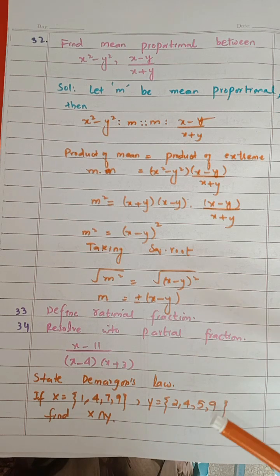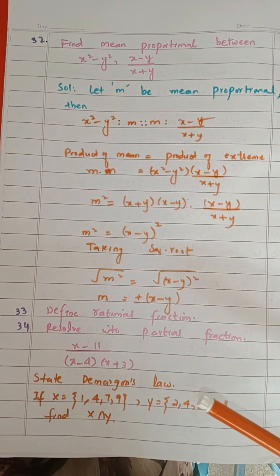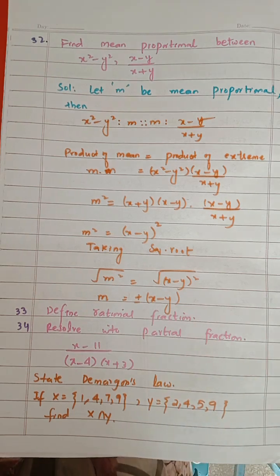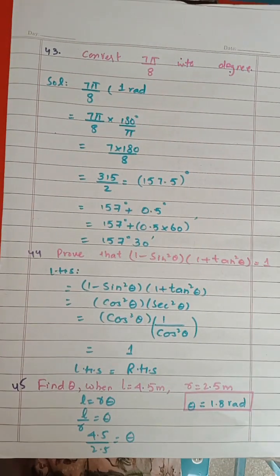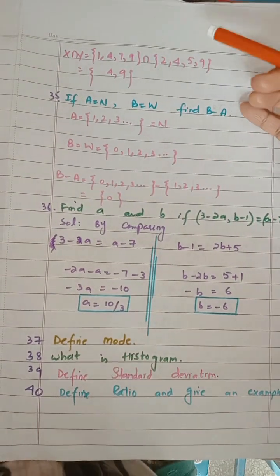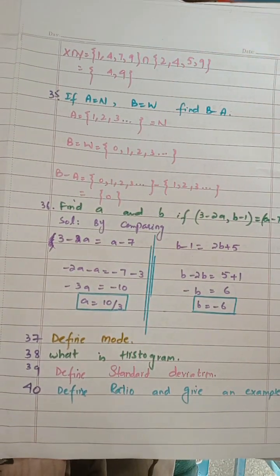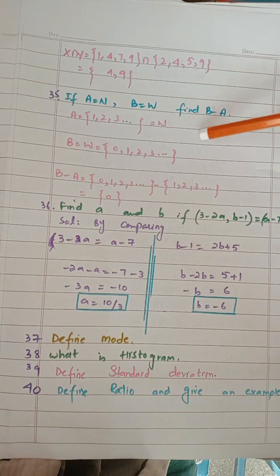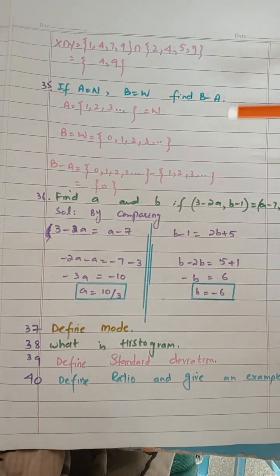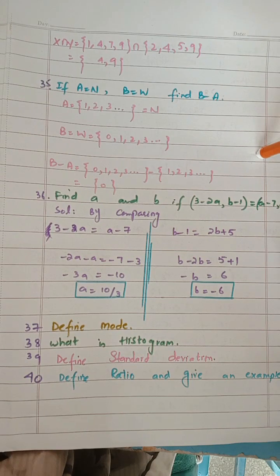State De Morgan's law — you have to write both De Morgan's statements. Next, find x intersection y. Write x first and y later. The intersection means the common numbers — 49 means the common number. This question was in our previous group as well.